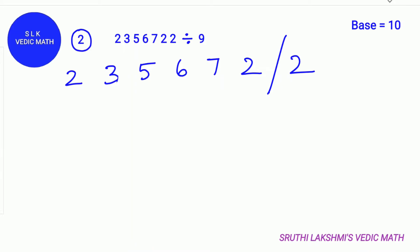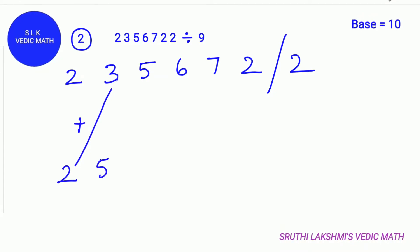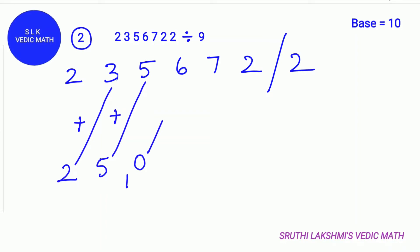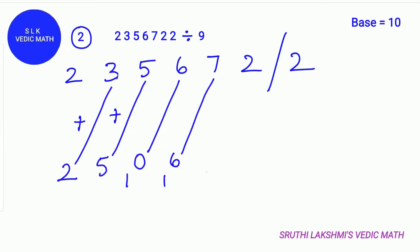First write down the first digit down as it is. Next add 2 plus the next digit 3. 2 plus 3 is 5. Then do 5 plus 5 which is 10. We write down the carry 1 and write down the 0. Next do 10 plus 6 which is 16. Write down the 6 and carry the 1. Next do 16 plus 7. 16 plus 7 is 23. We write down the 2 and carry the 3. We write down the 3 and carry the 2.